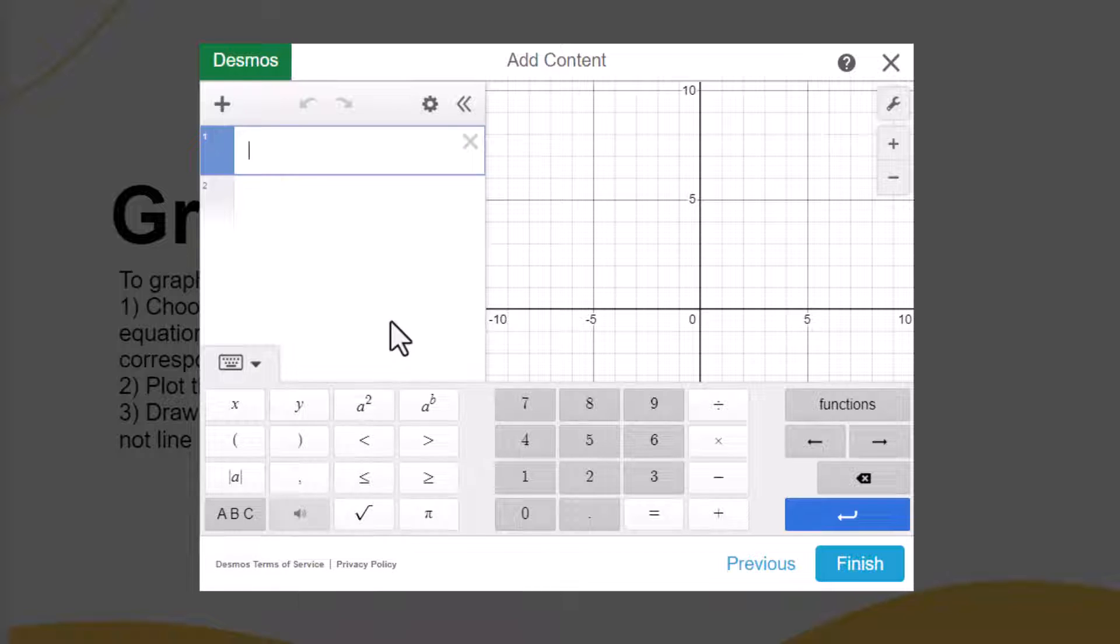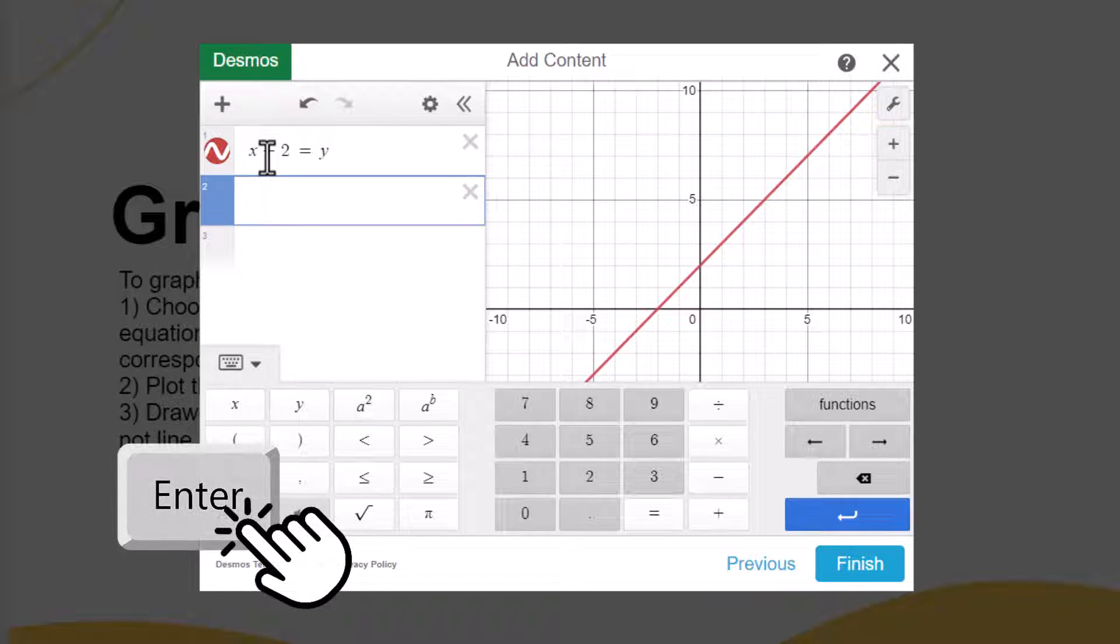Let's look at some examples and start with plotting a line: x plus 2 equals y. Notice how the values are represented on the graph instantly. Hit the enter button to add a new expression.